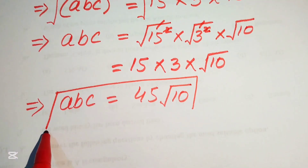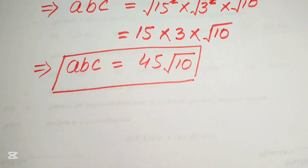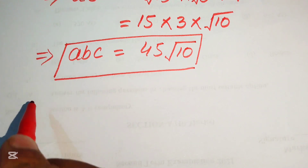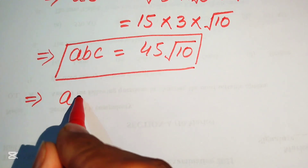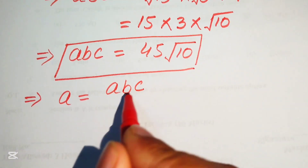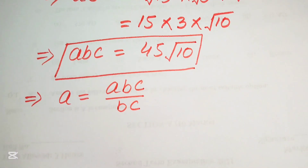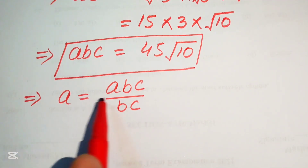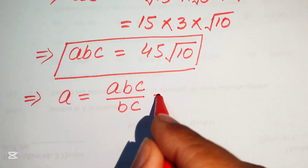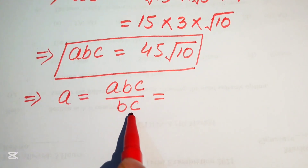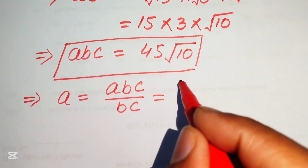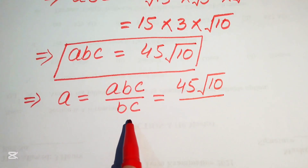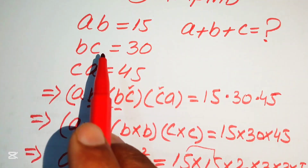Now we find the individual values. We write a = abc / bc. The bc cancels, leaving a. Substituting abc = 45√10 and bc = 30, we get a = 45√10 / 30.